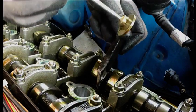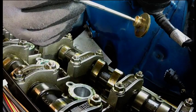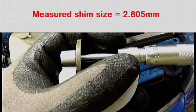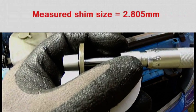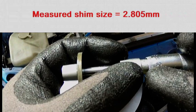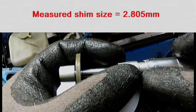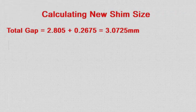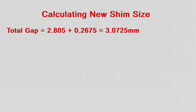There is the shim. The shim is nominally 2.80 mm but it's actually 2.805 mm. The current total gap size is the sum of the shim size and the gap size which is 3.0725 mm.